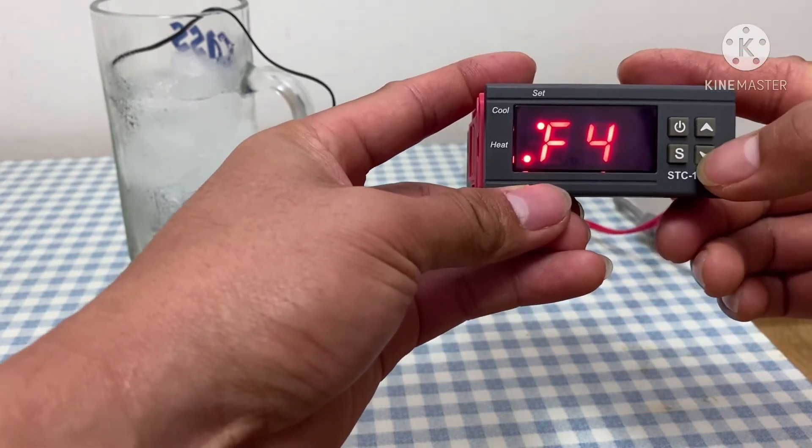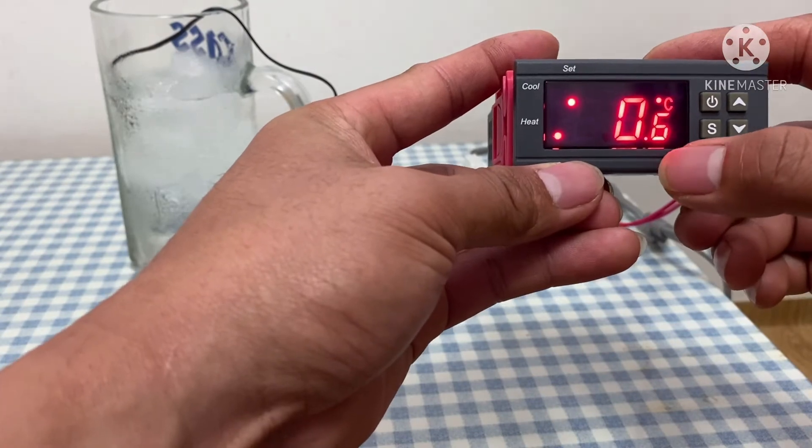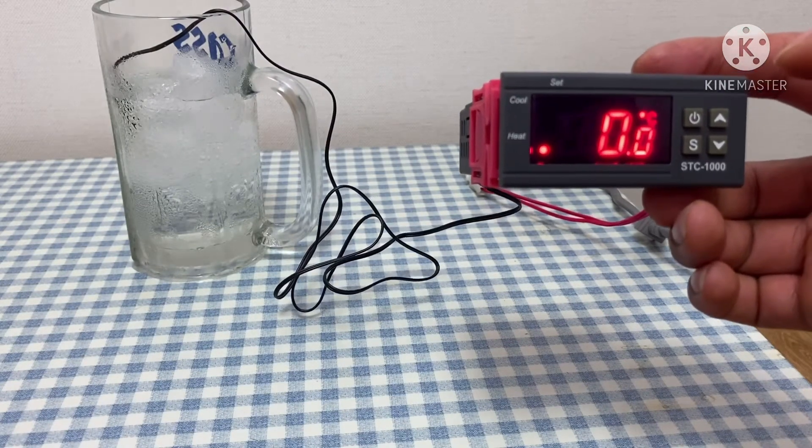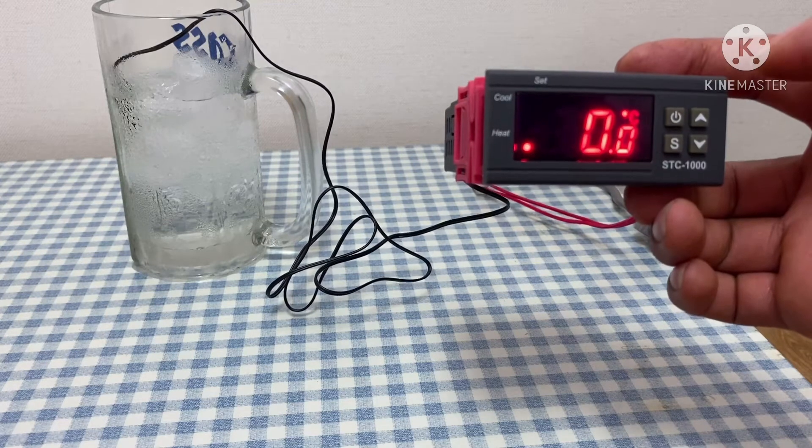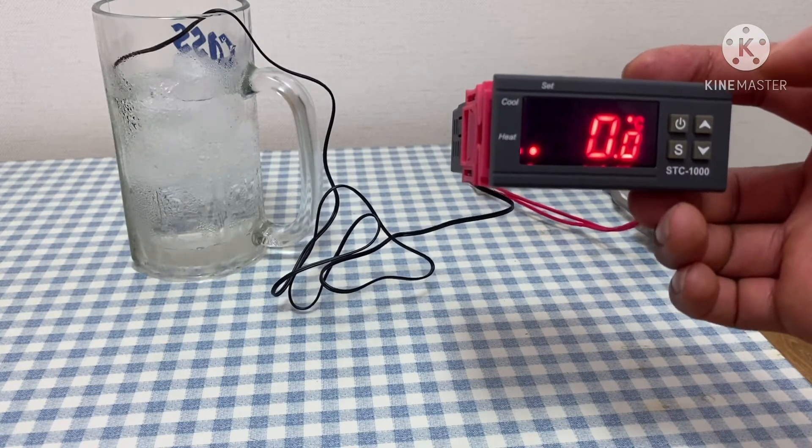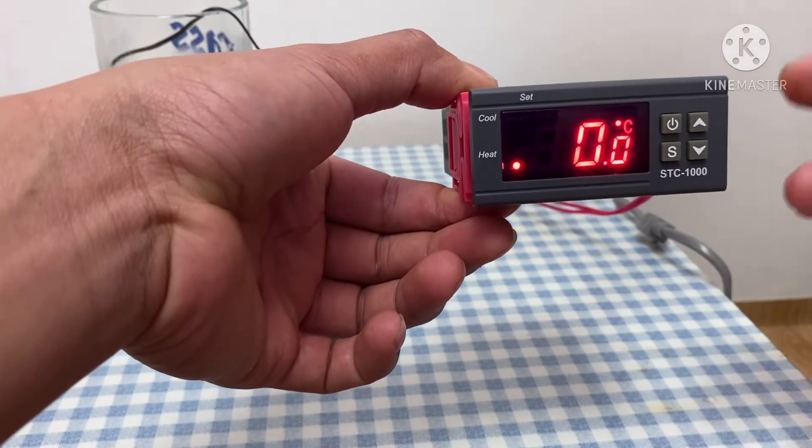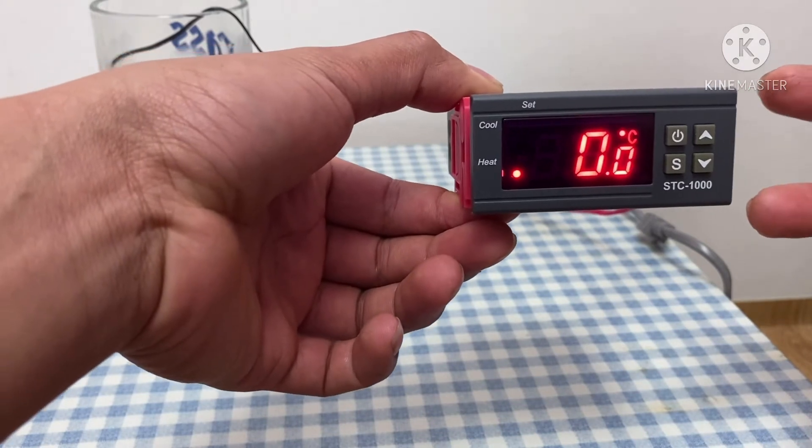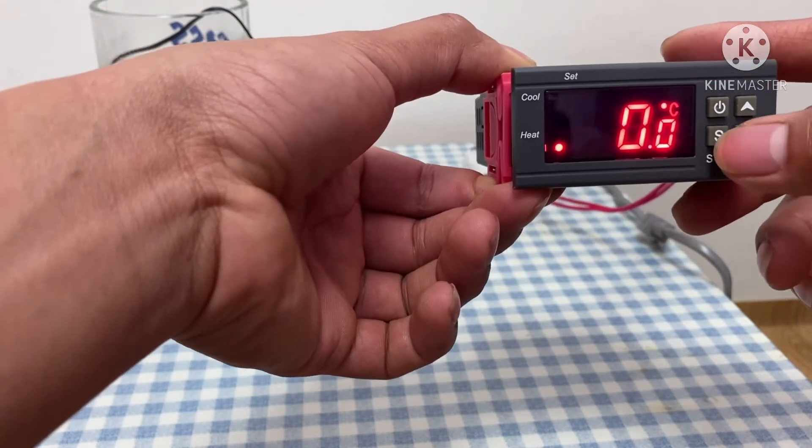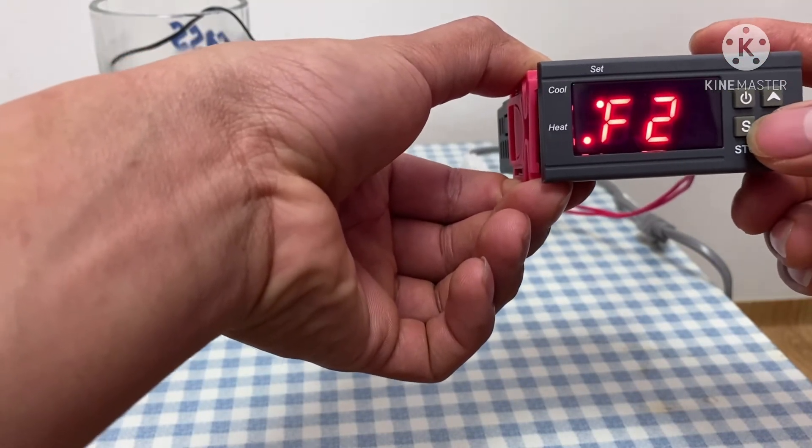F2—the setting must be 0.6 degrees Celsius. It means to say that when the temperature decreases from 37.8 degrees going to 37.2 degrees Celsius, when the temperature cools off, then the heater will automatically turn on. So the setting must be 0.6 in F2. I'll show you once again—F2 the setting must be 0.6.